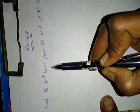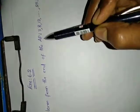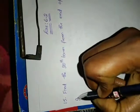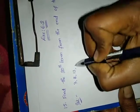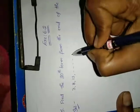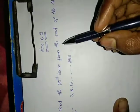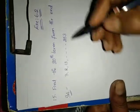Find the 20th term from the end of the AP. They have given one AP: 3, 8, 13 and so on, up to 253. We have to find the 20th term from the end.